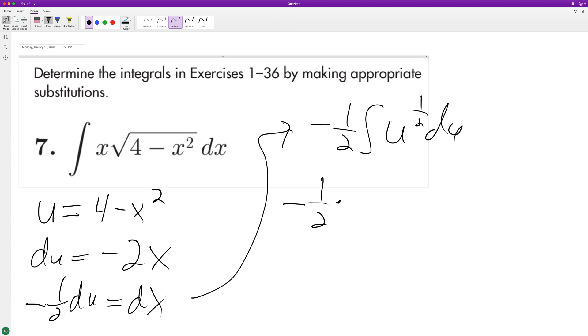1 half times 2 because we do... excuse me, that's not right. u raised to the 1 half over 1 half plus 1. So the 2 times the 3 over 2 cancel off. We get 1 third.